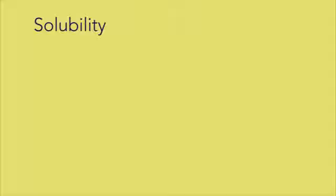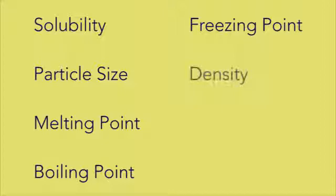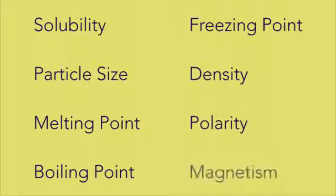The other thing you need to know about mixtures is that their individual parts or pieces can be separated. This is because the elements or compounds that combine to make the mixture retain their physical properties. So because they are not chemically bound, they can sometimes be separated based on solubility, particle size, melting point, boiling point, freezing point, density, polarity, and magnetism.